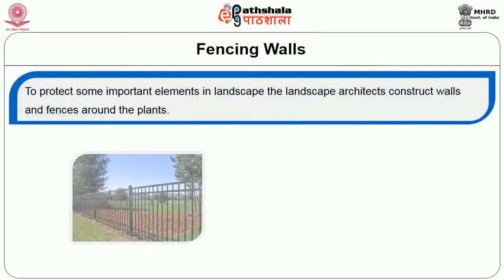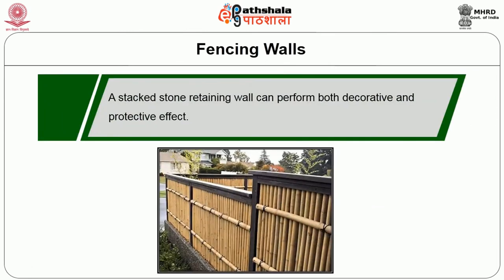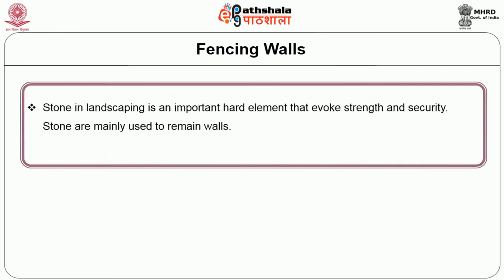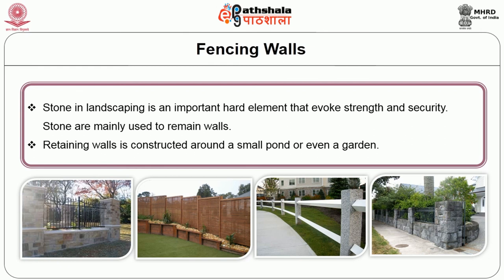Fencing walls — to protect some important element in the landscape, landscape architects construct walls and fences around the plants. The types of fencing used are rod, union fence, vinyl and privacy fences. A stacked stone retaining wall can perform both a decorative and protective effect. Bamboo fencing is a renewable source and creates a natural look. Stone in landscaping is an important hard element that evokes strength and security; stones are mainly used for retaining walls. A retaining wall is constructed around a small pond or even a garden. Black stone is a very popular choice used for simple ornamental design. Boulders are also used for creating a decorative effect. The important flagstones are bridgewood, bluestone, granite and honeycomb western stone.